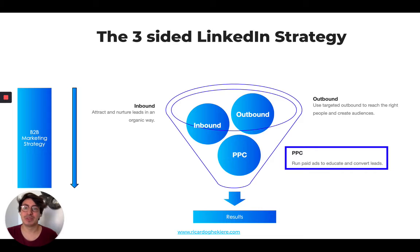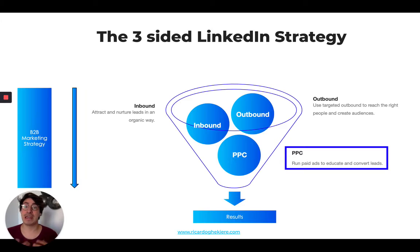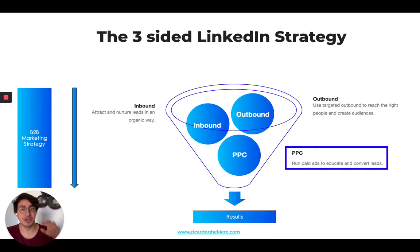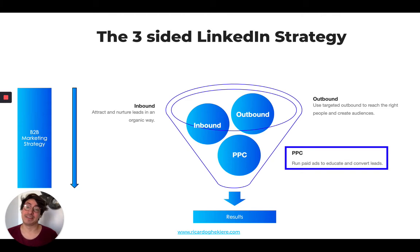When you look at the second pillar, we talk about outbound. Outbound is really about how you connect with people — going from personal profiles to your personas, the people you want to reach to do business with. This is mostly where your sales team reaches out to relevant people, targeted accounts, and so on. That's where outbound comes into play.